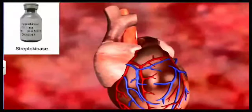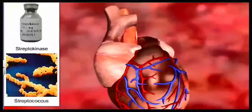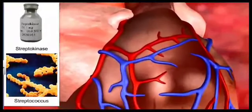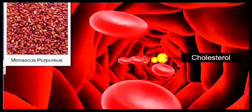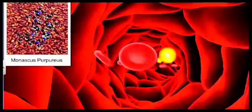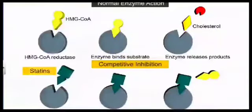These microbes have been used to produce so many medicines like Streptokinase which is produced by Streptococcus which is used as a clot buster for patients suffering from myocardial infarction or which is commonly called as heart attack. Likewise, one enzyme called statin has been produced from Monascus purpureus or yeast which is used in lowering the cholesterol. So it acts on the liver so that the cholesterol production can be reduced.